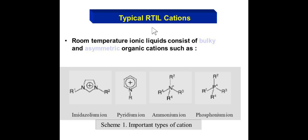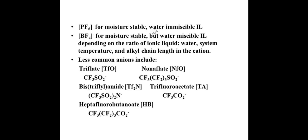Typical room temperature ionic liquids consist of bulky and asymmetric organic cations such as imidazolium ion, pyridinium ion, ammonium ion, and phosphonium ion. So there are two types of ions. One is cation as you can see: imidazolium, pyridinium, ammonium, and phosphonium.